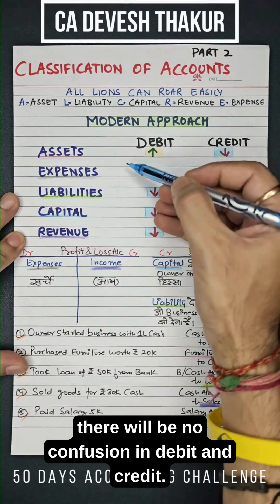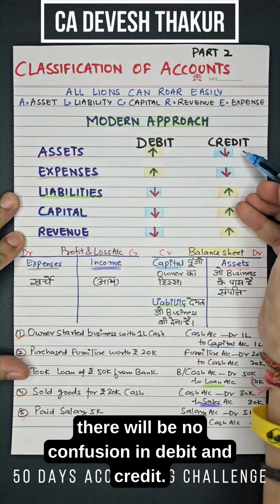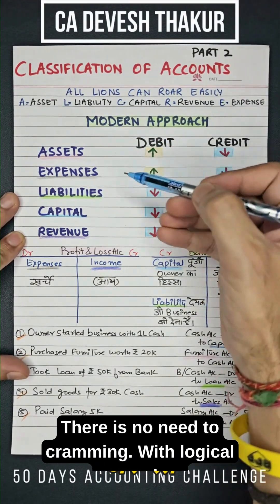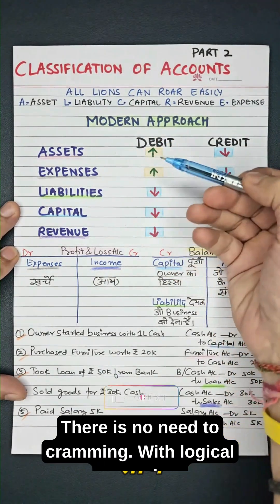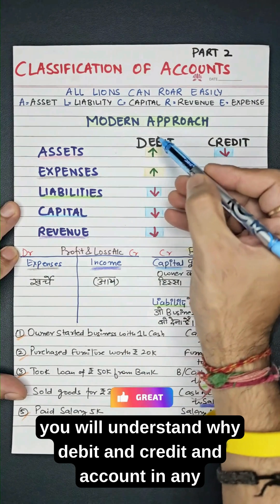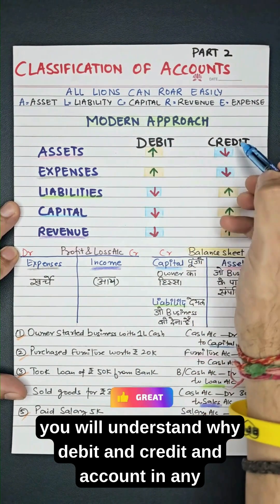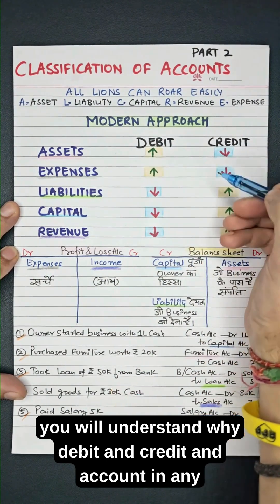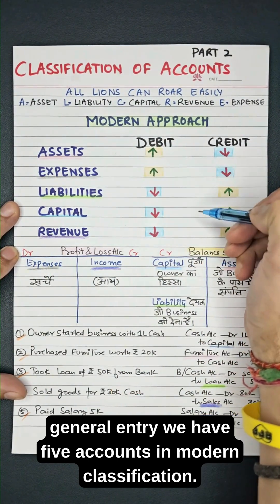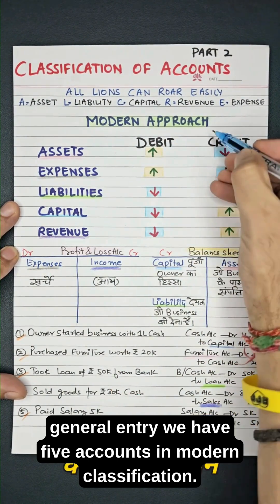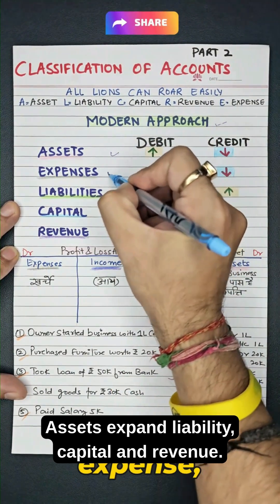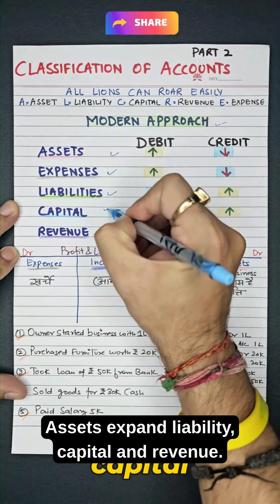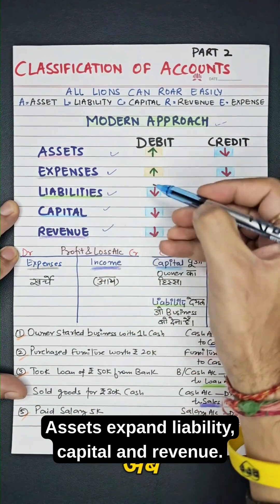After today, there will be no confusion in debit and credit. With logical reasoning, you will understand why debit and credit. In any general entry, we have five accounts in modern classification: assets, expand liability, capital, and revenue.